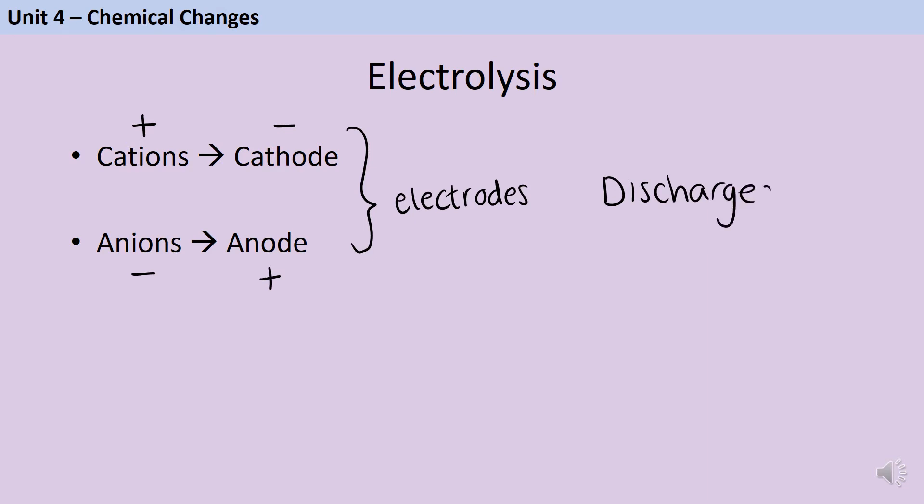In other words, they stop being charged and become neutral once more. And this happens by electrons being given and received between the ions and the electrodes. In order for this to happen, the positive cations will gain some negative electrons. In other words, they are going to be reduced.